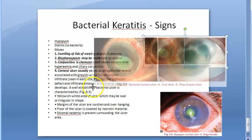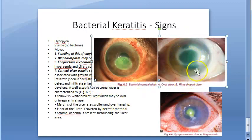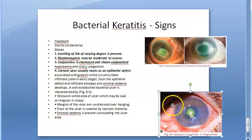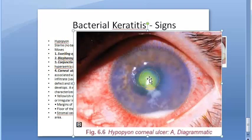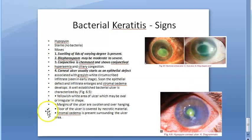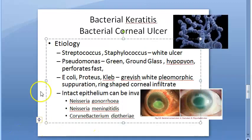For Staphylococcus and Streptococcus, the ulcer appears whitish-yellow. For Pseudomonas, remember green discharge. Pseudomonas causes hypopyon and can perforate very quickly — so remember: Pseudomonas = green, hypopyon, perforates very quickly.